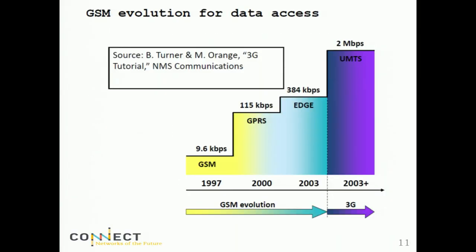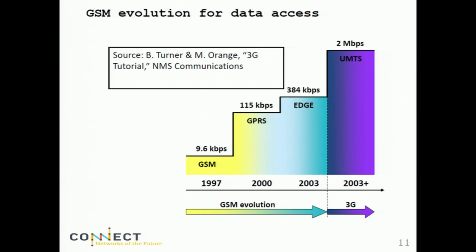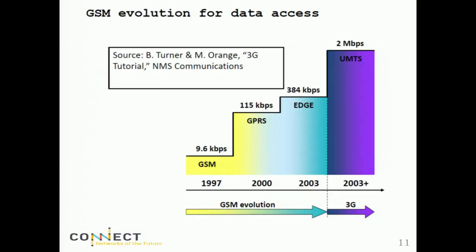Looking at the rates, there's been a massive jump from 2G to 3G. Going from roughly 1 kilobit to 1 megabit per second is three orders of magnitude in little more than five years. Even if users only see a fraction of peak rates, that proportional improvement is real and significant.